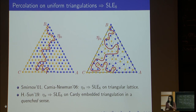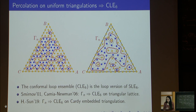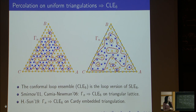There is also a loop version of this result. The conformal loop ensemble (CLE) is the loop version of SLE₆: an instance of CLE is a countable collection of loops that look locally like SLE₆ curves. In the triangular lattice the full collection of percolation interfaces converges to CLE₆, and we have the same result on the Cardy-embedded triangulation.